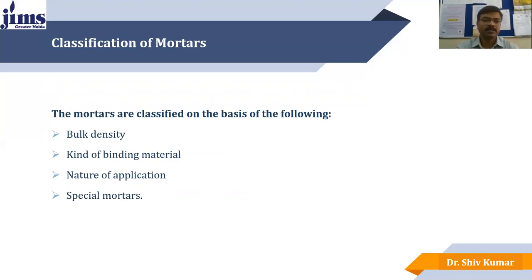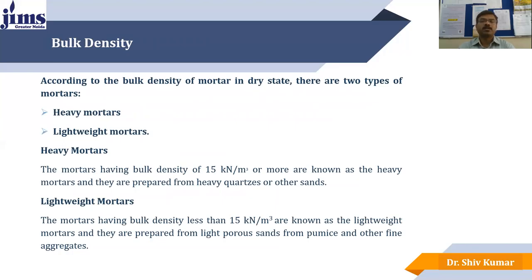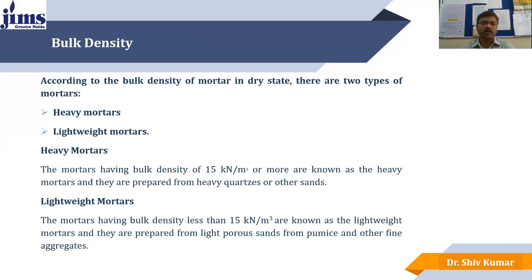According to the bulk density of mortar, there are two types: heavy mortar and lightweight mortar. Heavy mortars have a bulk density of near or more than 15 kilo-Newton per cubic meter and are prepared from heavy quartz or sand material. Lightweight mortars have less than 15 kilo-Newton per cubic meter bulk density and are prepared from light porous sand, pumice, and other lightweight fine aggregates.